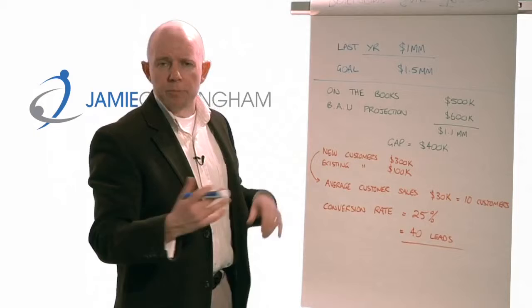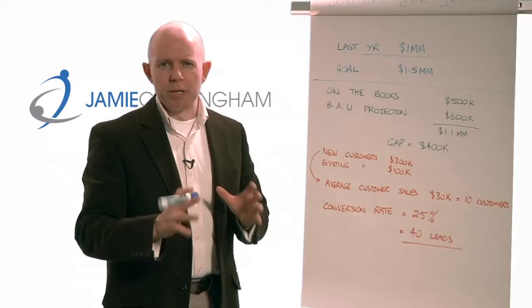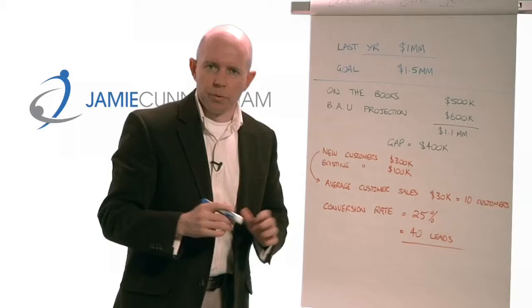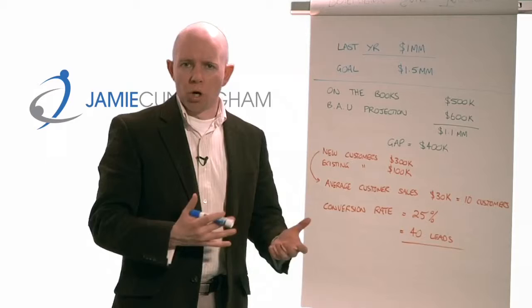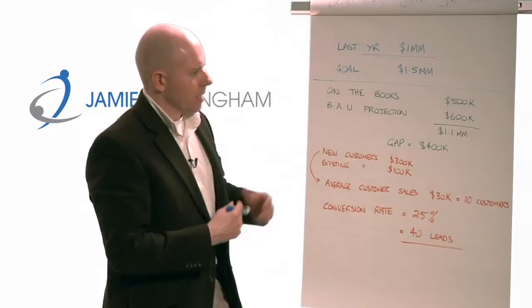What's on the books right now? That would include any existing contracts or really predictable sales trends — like a customer that always buys the same amount from you every year. It's pretty much in the bag, aside from any unforeseen events. So you've got an on-the-books number, and then a Business As Usual projection: all things being equal, if we do the same things next year as we've done this year, what could we expect? In this example, BAU including on-the-books comes to about $1.1 million.